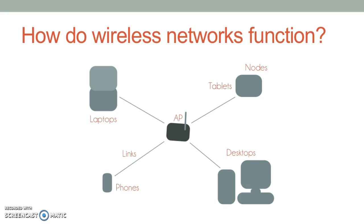Since we know the roles of the individual components, it's simple to put them together to understand how a wireless network functions. The access point or router sends information to and from the nodes or devices connected to the network using radio waves, or links.